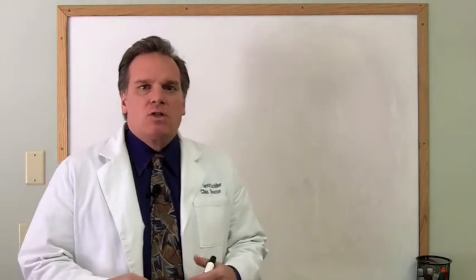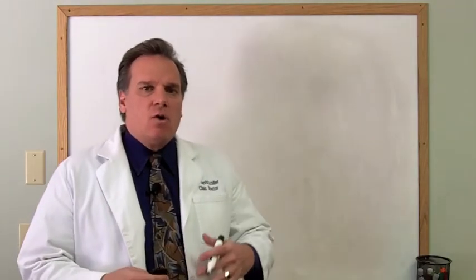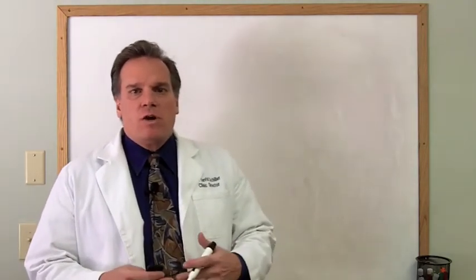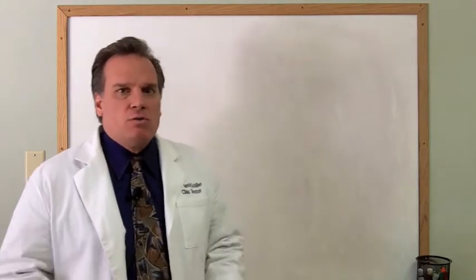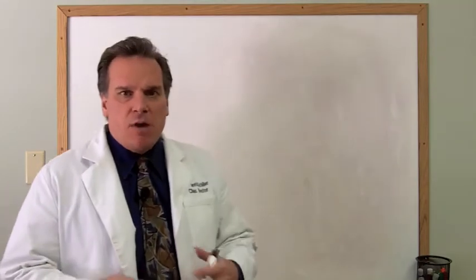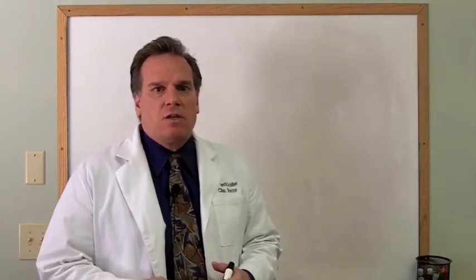Now what atypical celiac disease is, is an autoimmune condition where the body reacts to gluten in an autoimmune way. The body's immune system flares up and starts attacking body tissues due to this gluten sensitivity.